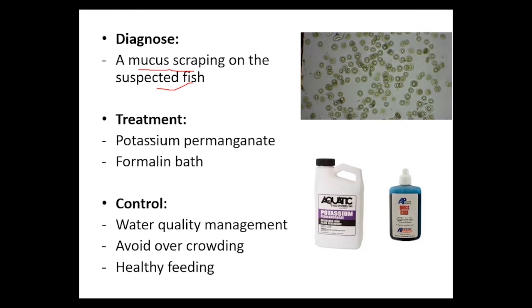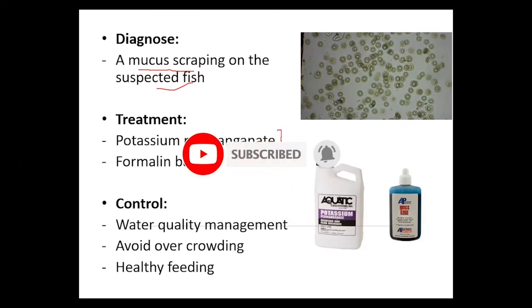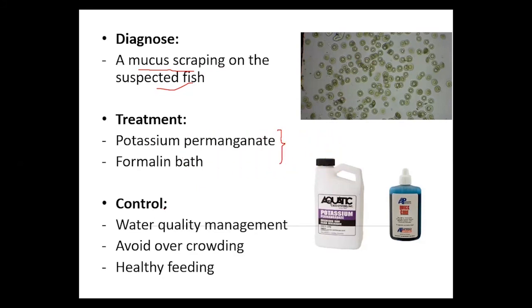For treatment, since this is an ectoparasite, we can use a potassium permanganate bath as well as a formalin bath — these are very common treatments for ectoparasitic diseases in fish. For control, we can manage water quality, avoid overcrowding, and provide proper nutrition to the fish. These are the measures to control trichodyniasis.